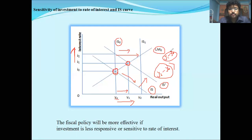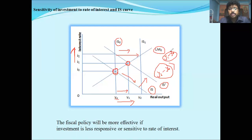If investment is more sensitive to the rate of interest, then an increase in investment or shifting of the IS curve will increase real output less. So what we have found from this lecture is that depending on the sensitivity of investment to the rate of interest, the shifting of the IS curve gives us different amounts of increase in real output. The fundamental conclusion is that fiscal policy will be more effective if investment is less responsive or sensitive to the rate of interest.